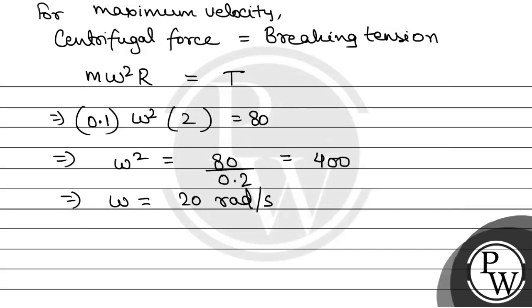Now, omega is 2 pi f. So that will be equal to 20. So f will be equal to 10 by pi revolution per second.